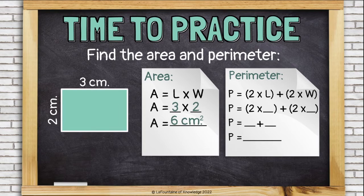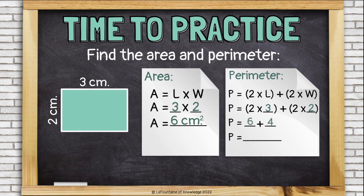Alright, now let's do perimeter. So once again, we'll plug in our length and our width. We're going to multiply them each by 2. That's doubling. 2 times 3 is 6 and 2 times 2 is 4. And then we simply add them together. 10 centimeters.